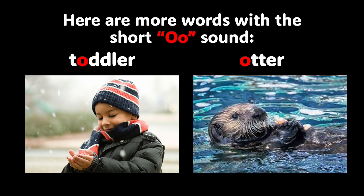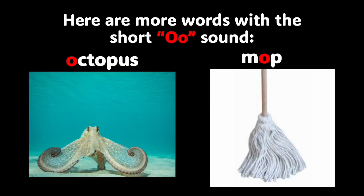We have one more slide before we get some practice. Look at these two words — they both have the short O sound: octopus and mop. Can you say those words by yourself? You did a great job. Octopus has the short O sound for the O at the beginning of the word, and mop also has the short O sound — the O is in the middle of the word. Let's keep learning.